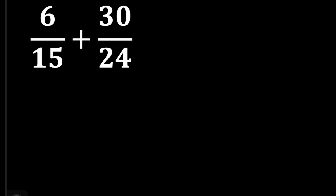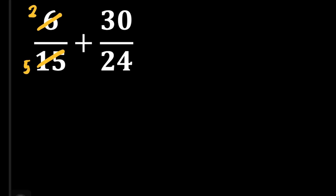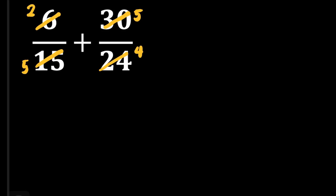We have another one. For this case, I think it is better if we reduce to lowest terms first so that it's easy for us to add these two fractions. What number can we divide 6 and 15? That is 3. 6 divided by 3 is 2, and 15 divided by 3 is 5. What number can we divide 30 and 24? That's 6. 30 divided by 6 is equal to 5, and 24 divided by 6 is equal to 4. So we can copy the lowest terms of these two fractions: that's 2 fifths and 5 fourths.